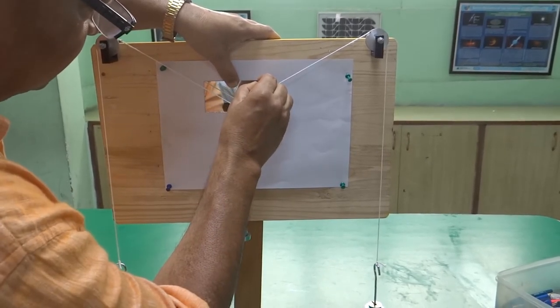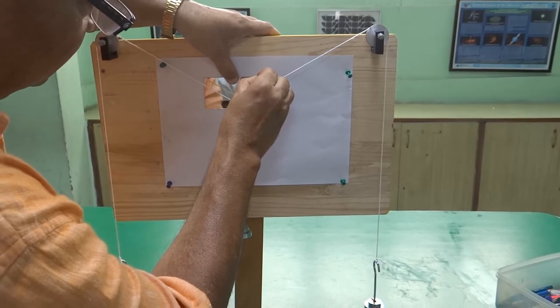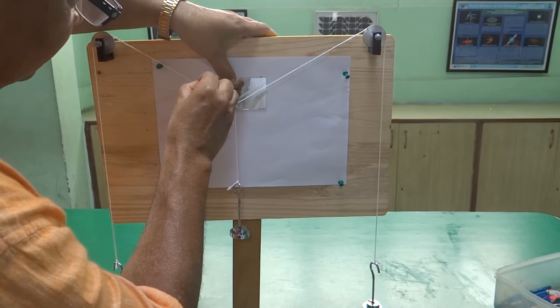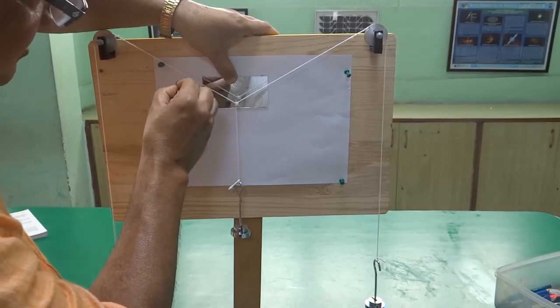Mark this side of the thread. Because one tension is acting this way. Mark this side of the thread, left hand side.